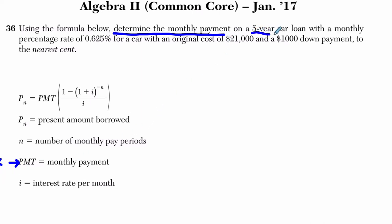Okay, it's a five-year car loan. Let's see if that applies. Number of monthly pay periods, well, it's five years, right, times 12 months per year equals 60 months.